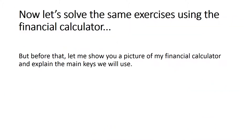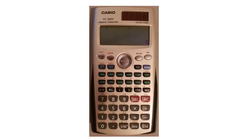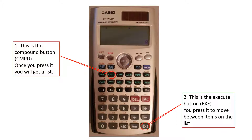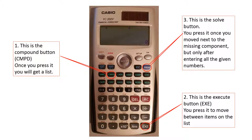We have reached the second part of this video where I will show you how to solve the same problems using a financial calculator. We will use the CMPD key, which is the compound button. Once you press it you get a list. We will also use the EXE button — the execute button — to move between items on the list, and the SOLVE button, which you press once you are next to the missing component after entering all the given numbers.